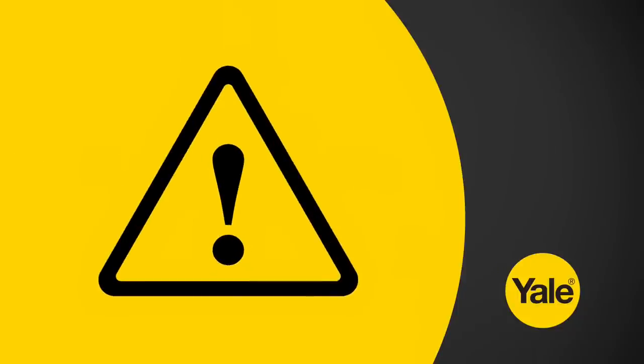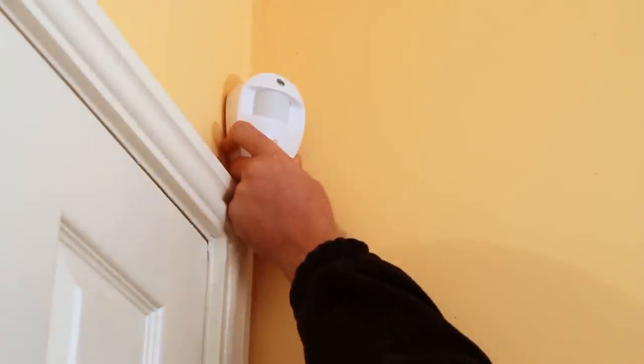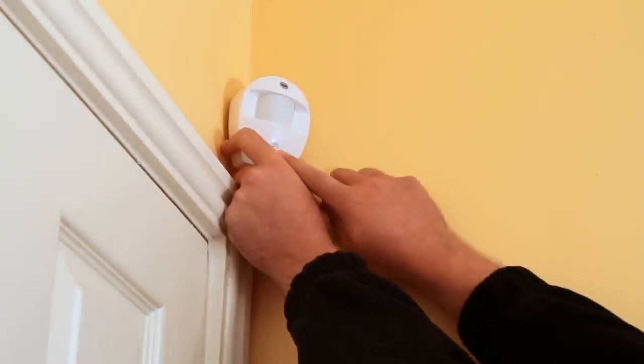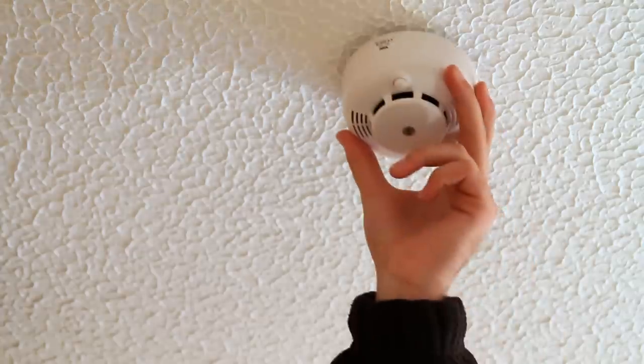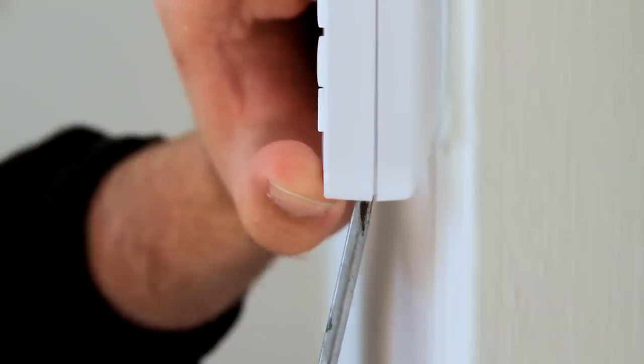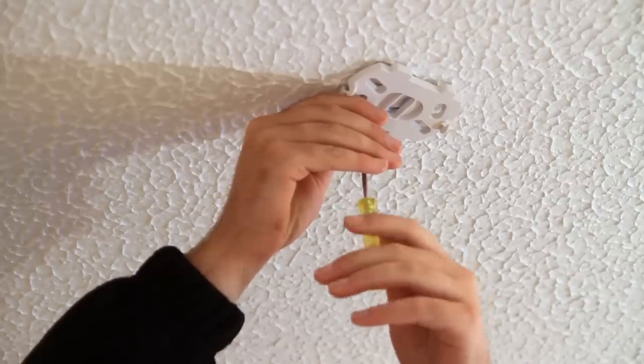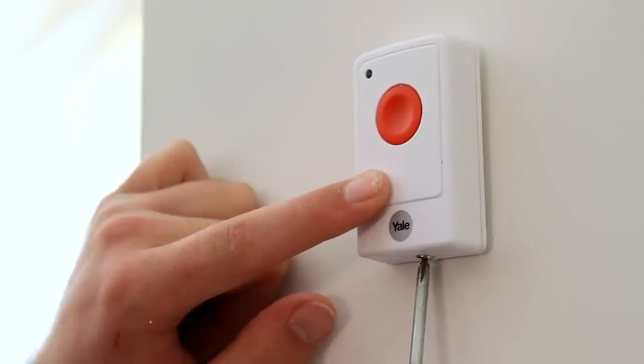Please note, the fault light may show and a beep may be heard periodically from the control panel. You can ignore this until you have finished mounting all components. Now that the siren is mounted and you are happy that all your components can communicate with the control panel, mount them in the desired locations. Your new Yale Easy Fit Alarm system is now installed.